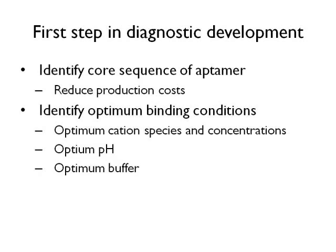It is also useful to work at the same time to optimize binding conditions. The species of cation used and the concentration of cation can improve binding affinity by at least an order of magnitude. It is also necessary to characterize how binding is affected by pH and by buffer composition. Here we are looking for a buffer in which the aptamer will work the same regardless of small variations in pH or buffer component concentrations.